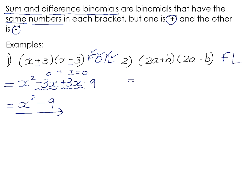So if we look here, 2a times 2a is 4a squared, and positive b times negative b is negative b squared. So the final answer is 4a squared minus b squared.